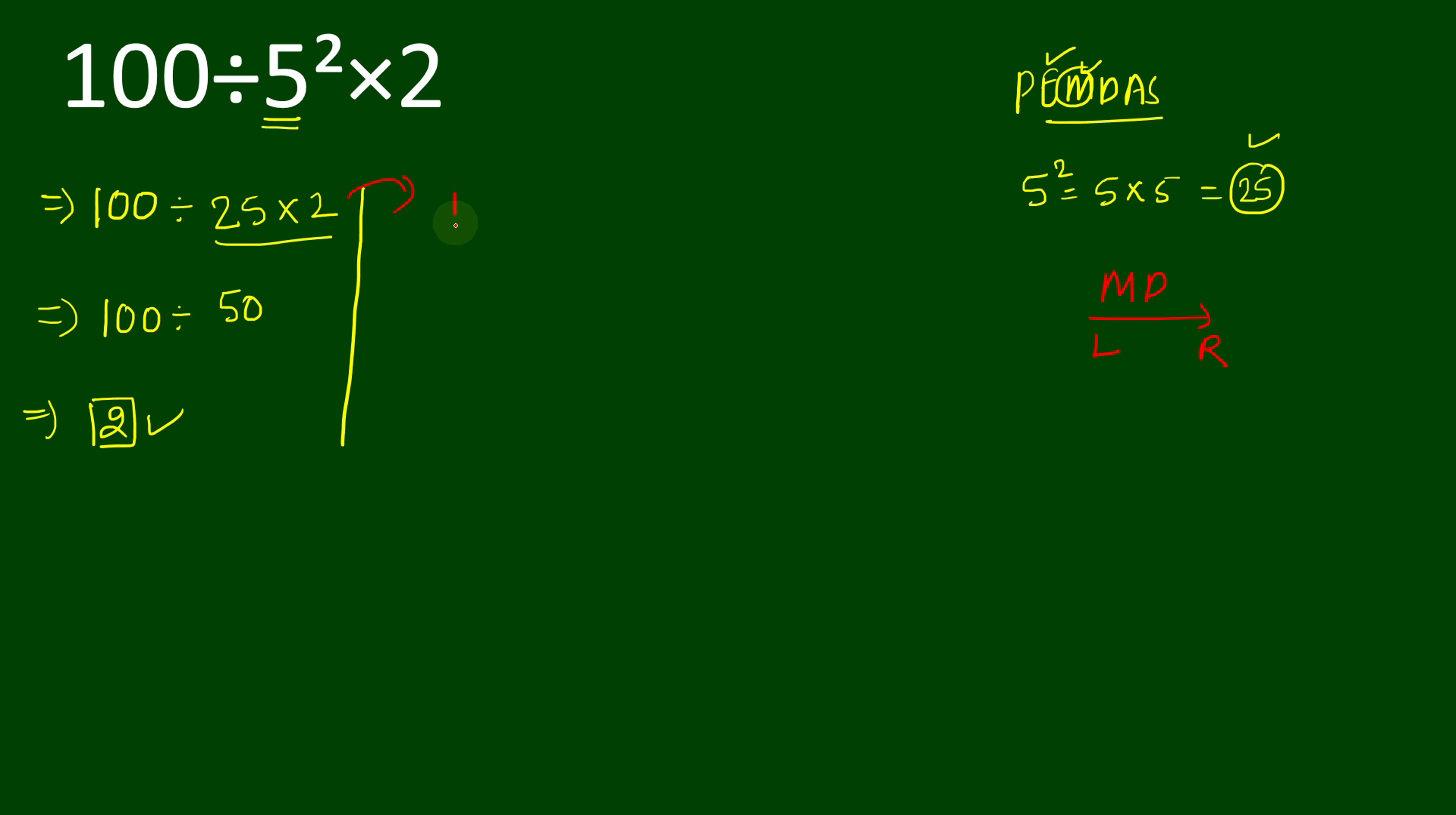We will write our question again: 100 divided by 25 times 2. We will operate left to right, and the division comes first, which will give result. 100 divided by 25 will give result 4. So we will write 4 times 2, which equals 8. So as you can see, 8 is the right answer.